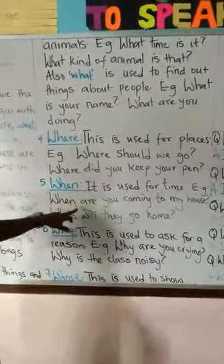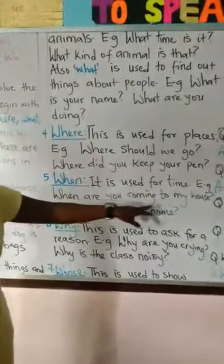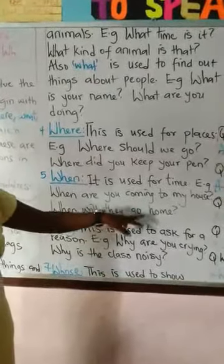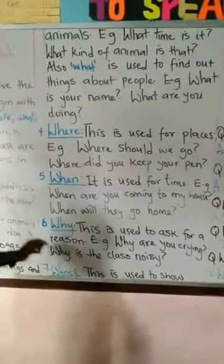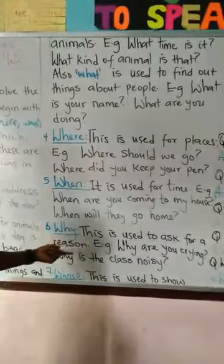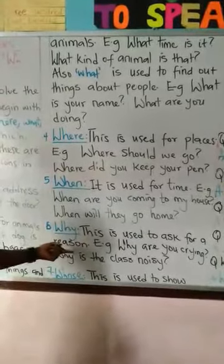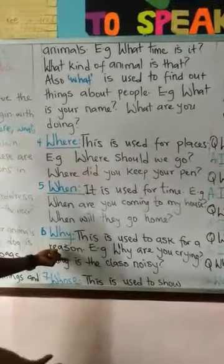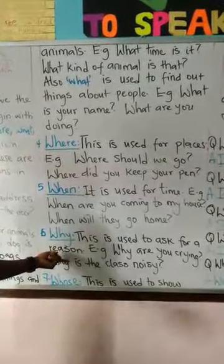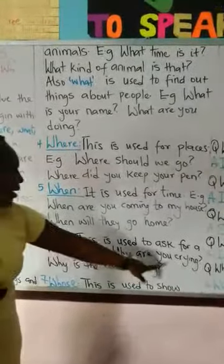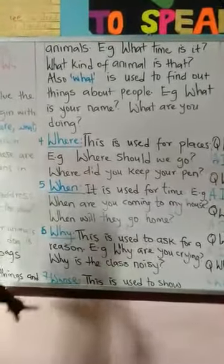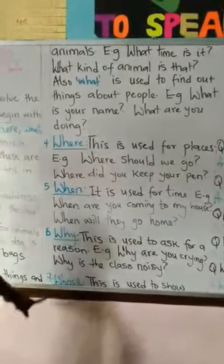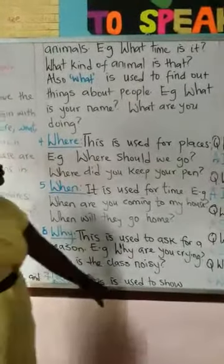Number five: WHEN — used for time. For example, 'When are you coming to my house?' and 'When will they go home?' Number six: WHY — this is used to ask for a reason, because of something happening. For example, 'Why are you crying?' and 'Why is the class noisy?'